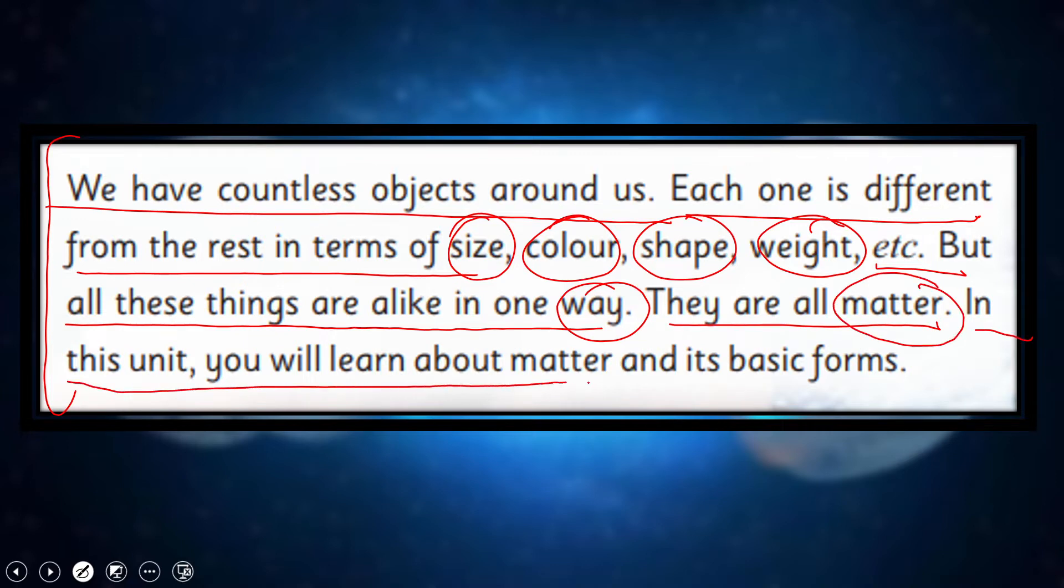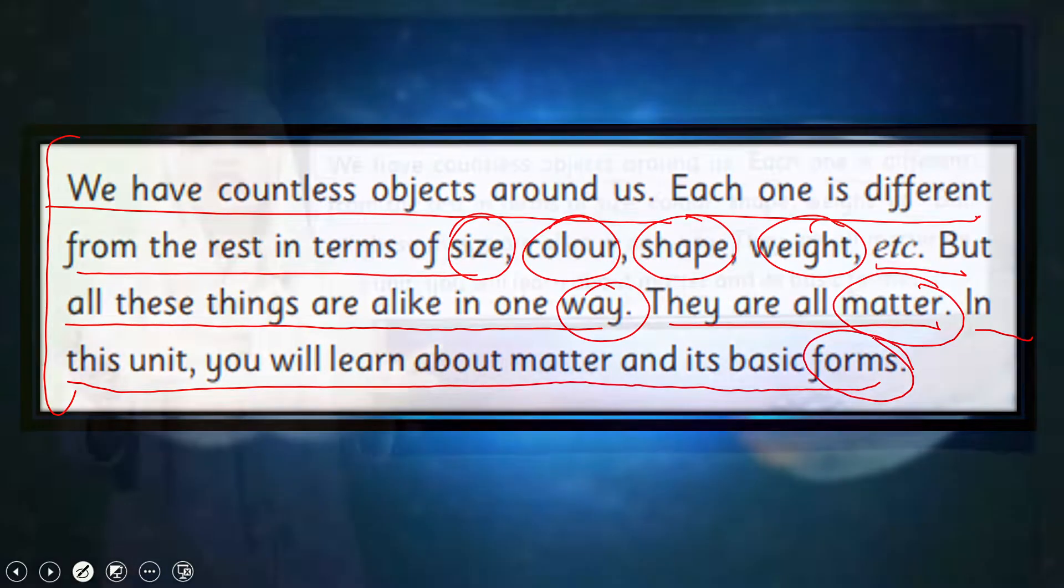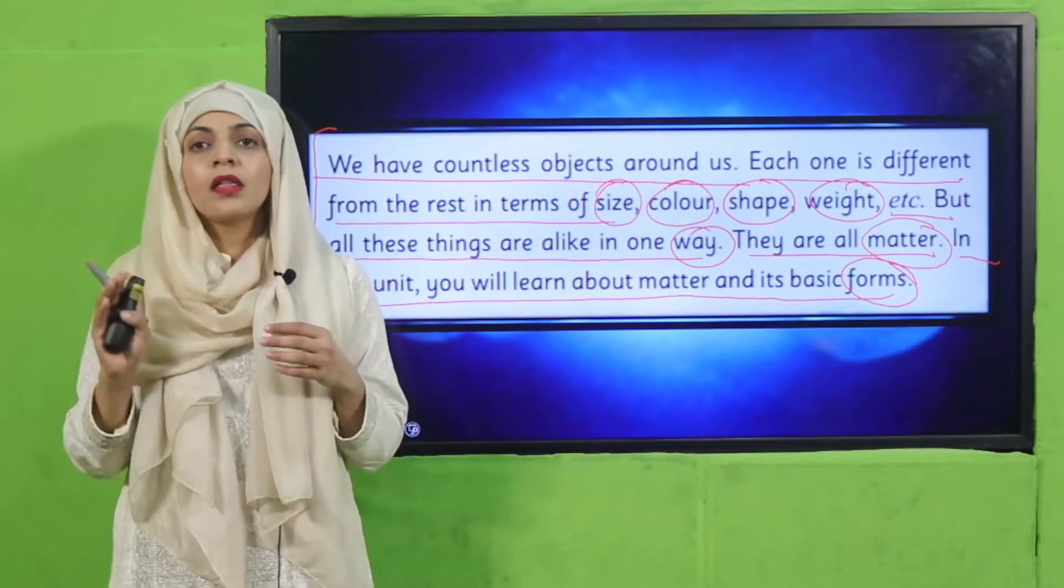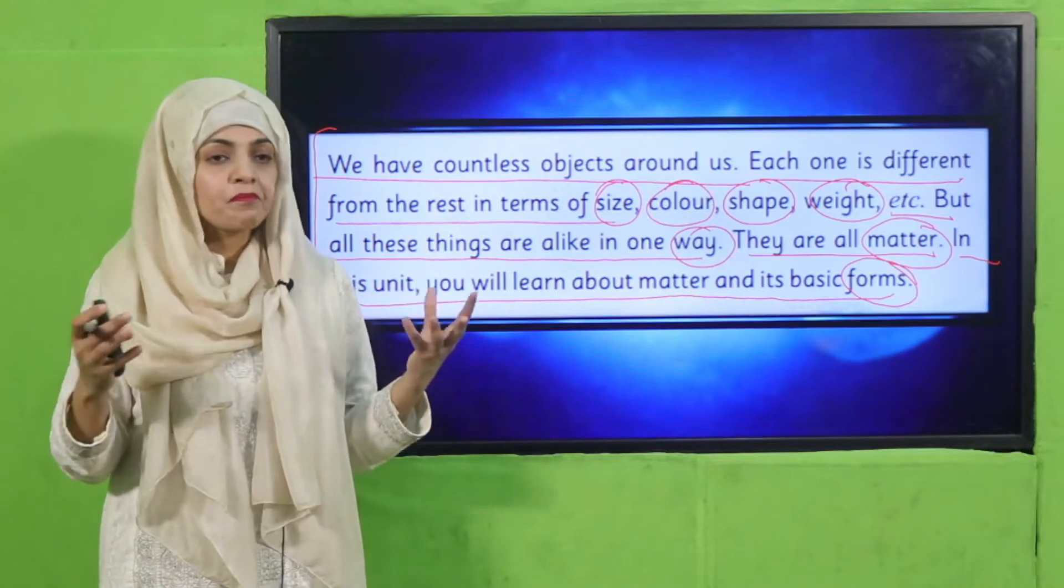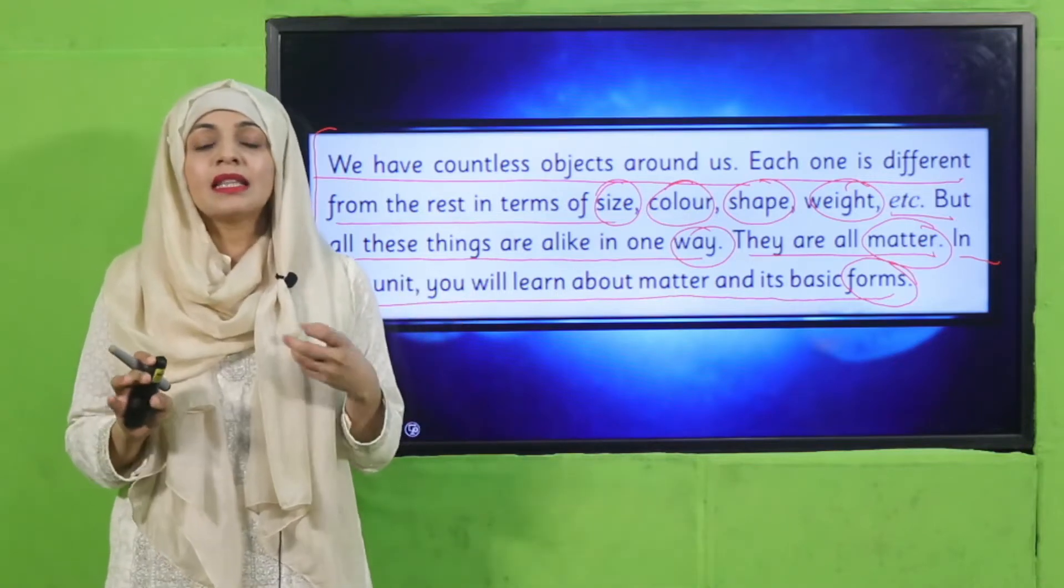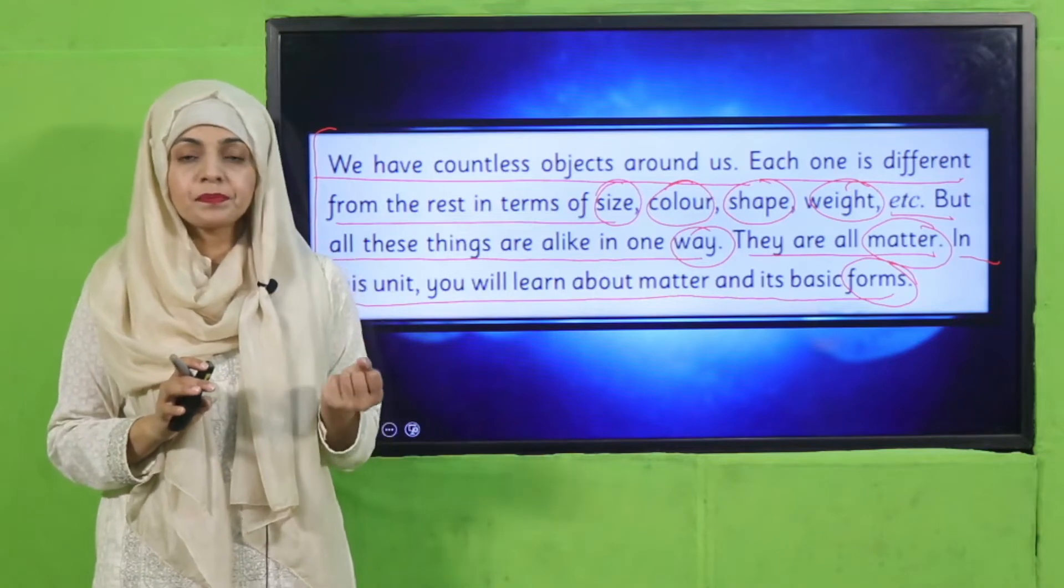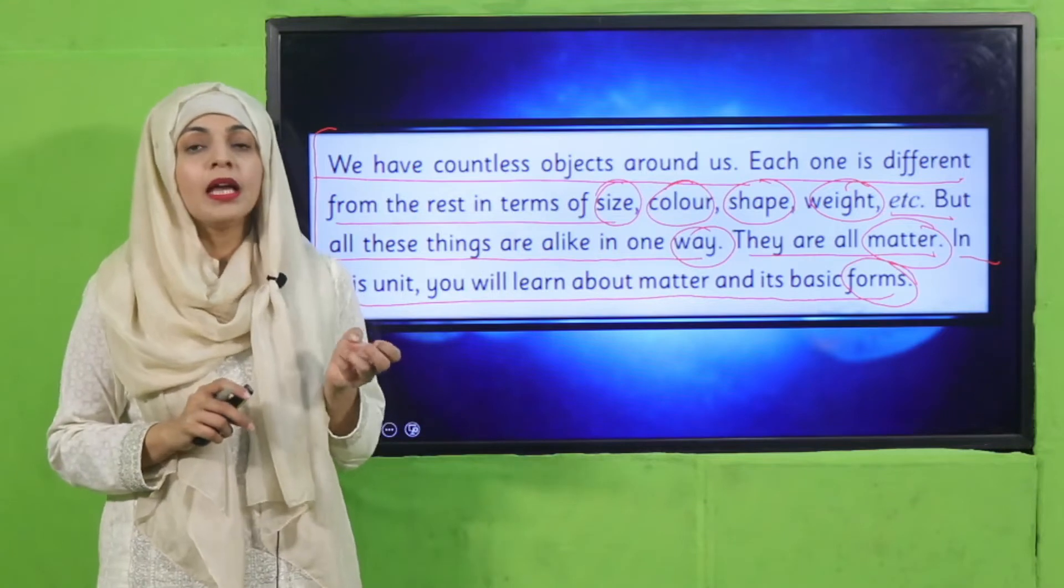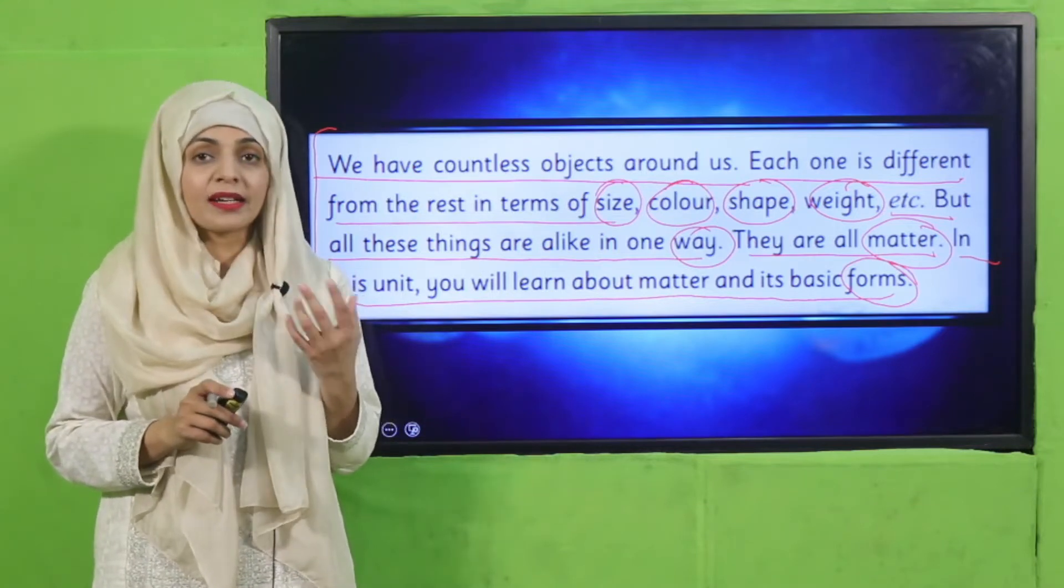In this unit, you will learn about matter and its basic forms. So my dear students, we are going to study about matter - everything around us: the air, the trees, the tables, chairs, whatever you see around us is made up of matter. So in this unit we will study about matter and its basic forms and discuss their characteristics.